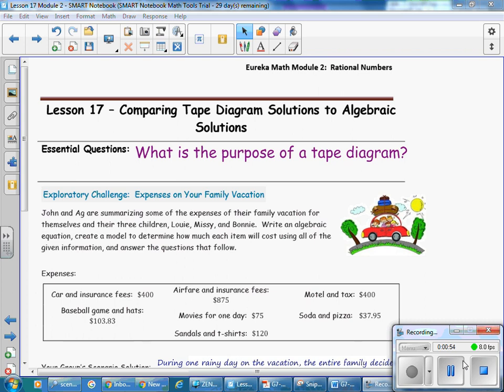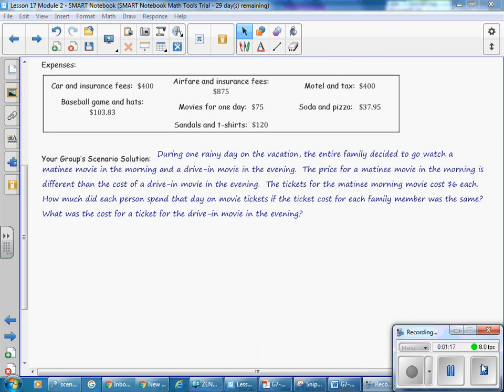Expenses for your family vacation. John and Ag are summarizing some of the expenses of their family vacation for themselves and their three children, Louie, Missy, and Bonnie. Write an algebraic equation. Create a model to determine how much each item will cost using all of the given information and answer the questions that follow. During one rainy day on the vacation, the entire family decided to go watch a matinee movie in the morning and a drive-in movie in the evening. The price for the matinee movie in the morning is different than the cost of a drive-in movie in the evening. The tickets for the matinee morning movie cost $6 each. How much did each person spend that day on the movie tickets if the ticket cost for each family member was the same? What was the cost for a ticket for the drive-in movie in the evening?